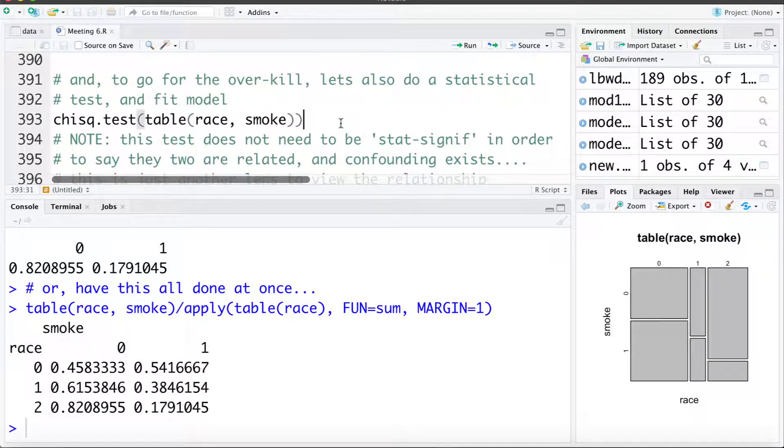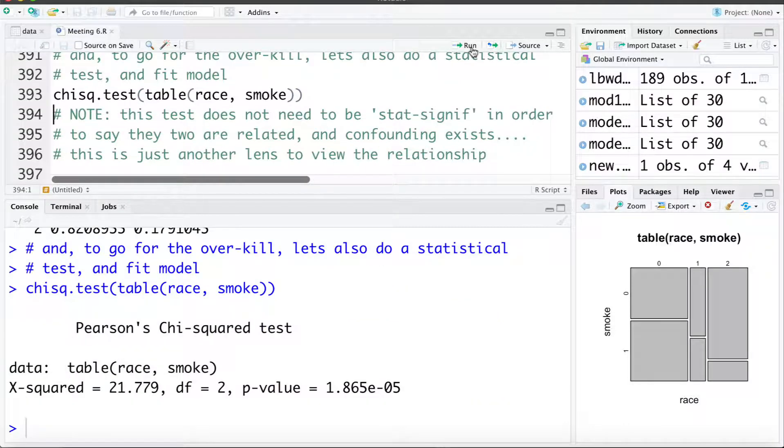Now we can also do a statistical test right race and smoking are both categorical variables. So we can do the chi-square test to test if there's a statistically significant association between the two. So let's look at that here. We can see it's a highly significant association and I just want to point out looking at the proportions or the plots are better ways of checking the association. For a confounder the association doesn't need to be statistically significant in order to adjust for it. Or we've also seen sometimes there might be a statistically significant association that isn't scientifically or clinically meaningful.